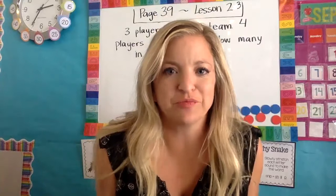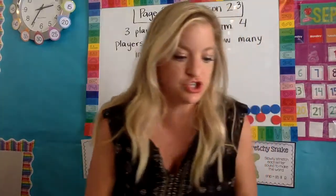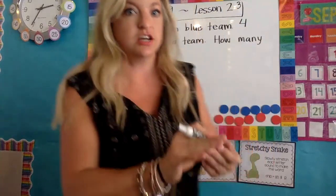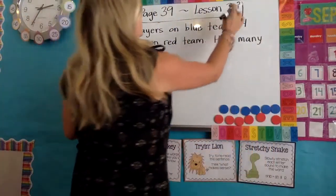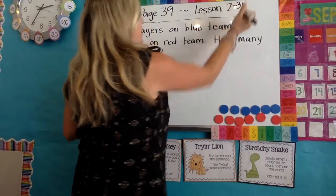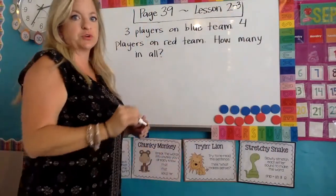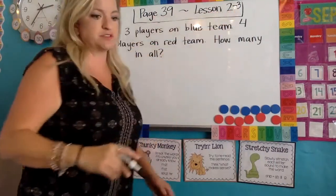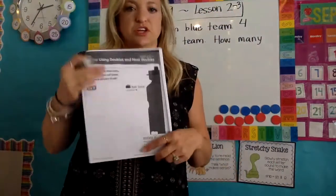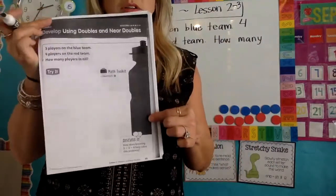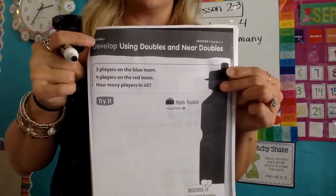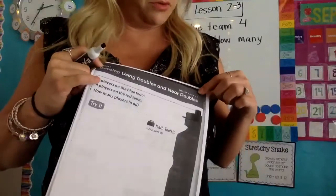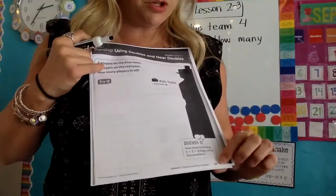Hey friends, it's time for math. We're on page 39 in our books. We're doing lesson two, session three, otherwise known as two dash three. So we're doing page 39, lesson two dash three. In your books, it has a red water bottle like this. Up at the top it says lesson two, session three, and we're on page 39.